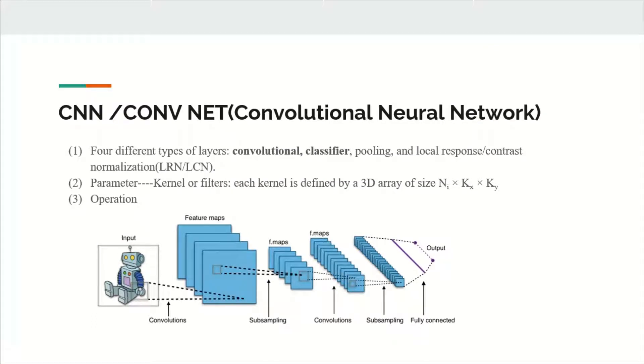So the first thing I would like to talk about is the Convolutional Neural Network. Convolutional Neural Network is a deep learning algorithm which can take an input image, assign importance to various aspects and objects in the image and be able to differentiate one from the other. It is designed by four different types of layers: convolutional, classifier, polling, and local response contrast normalization layers. Meanwhile, the convolutional layer is defined in terms of a collection of kernels or filters denoted by K. Each kernel is defined by a 3D array and converts an input feature map into an output matrix or feature map.